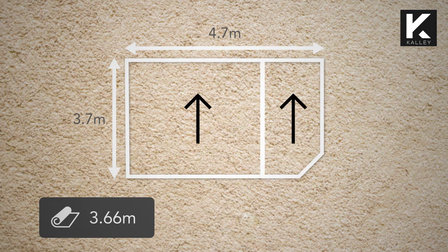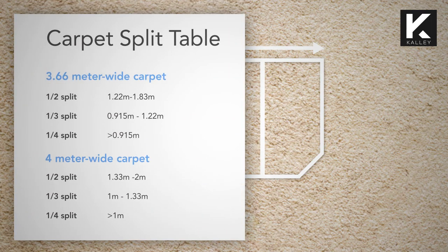It is important to know that when you join a carpet, both joints must be installed in the same direction. Please have a look at the carpet split table for ease of reference. With the table in hand, it is easy to work out the remaining cuts.